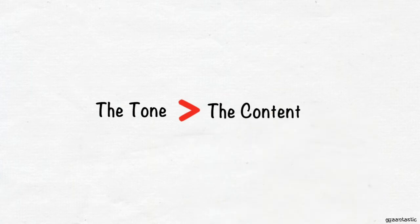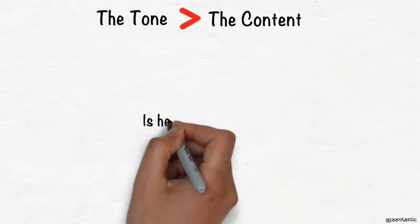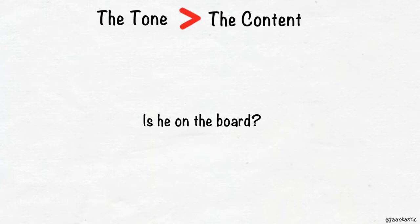The same sentence can be said in a number of ways and give a completely different meaning every time. For example, let me take this sentence: is he on the board? Notice how the tonality changes the meaning completely.